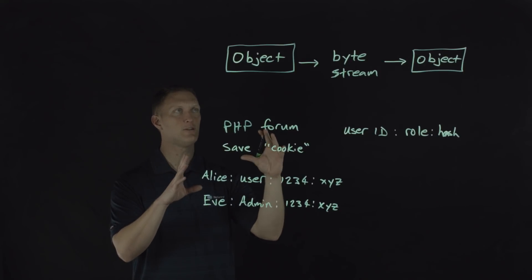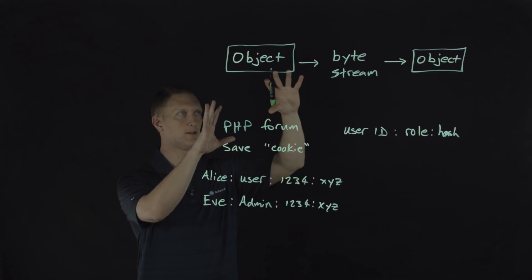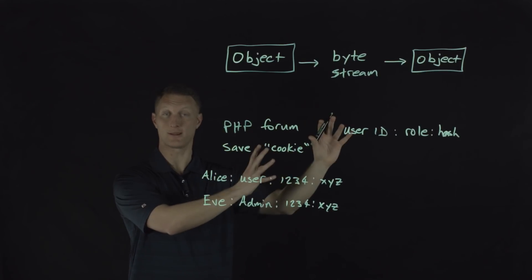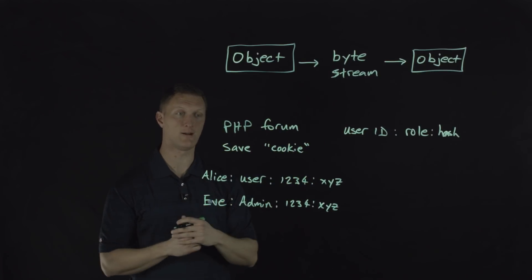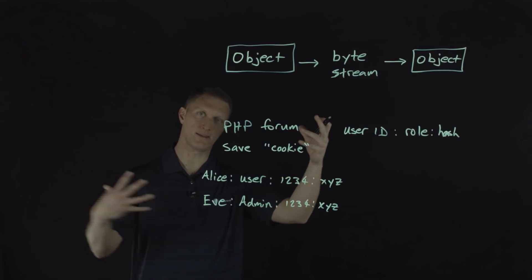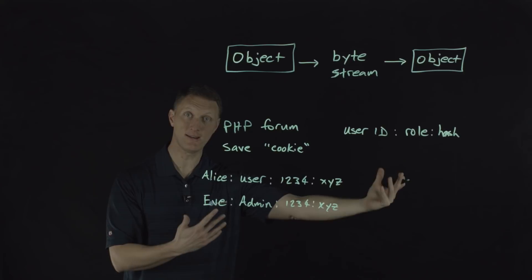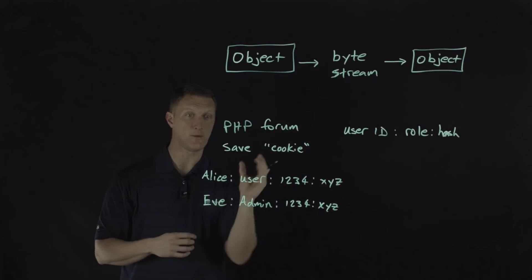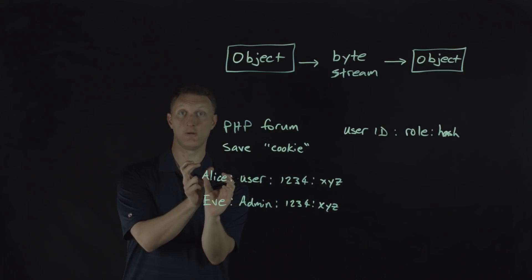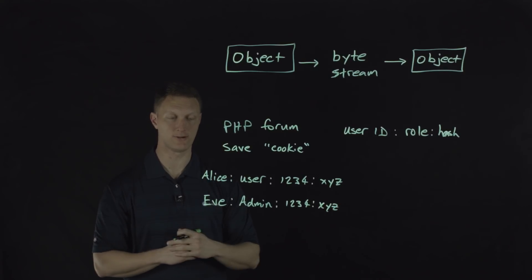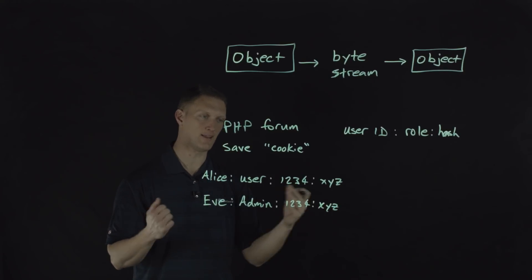There are some other things that you could do in addition to fixing this on the web application side, of course, and in the code itself, like a web application firewall. You could put that in front of your web application. And so as a potential deserialization, insecure deserialization attack is attempted at your web application, then a web application firewall could notice that and could stop that before it ever gets to your web application. So that's another thing you could do.